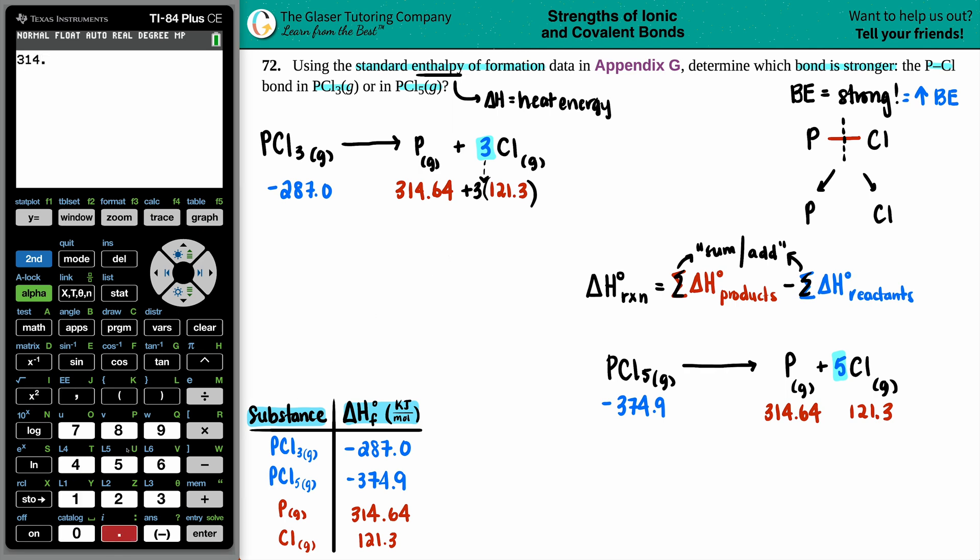Now let's sum up this total value. So 314.64 plus three times 121.3. So now I have a new sum value of 678.54.